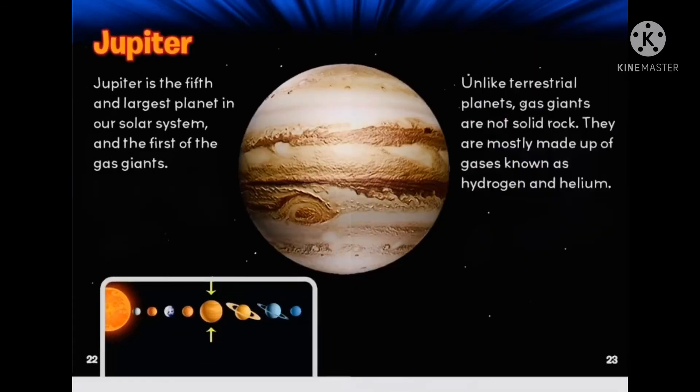Jupiter. Jupiter is the fifth and largest planet in our solar system and the first of the gas giants. Unlike terrestrial planets, gas giants are not solid rock. They are mostly made up of gases known as hydrogen and helium.